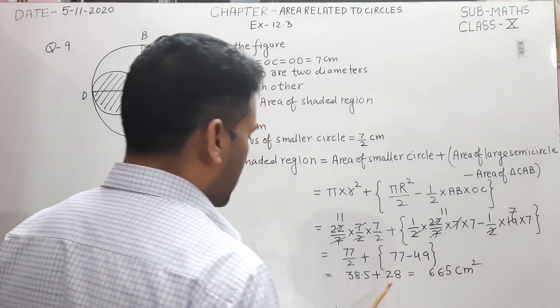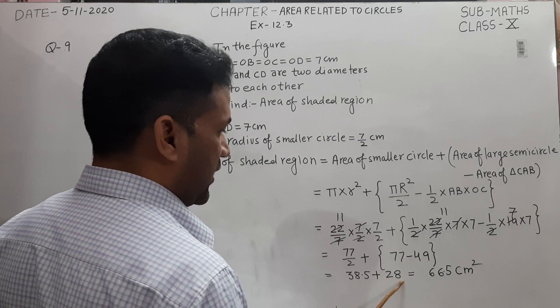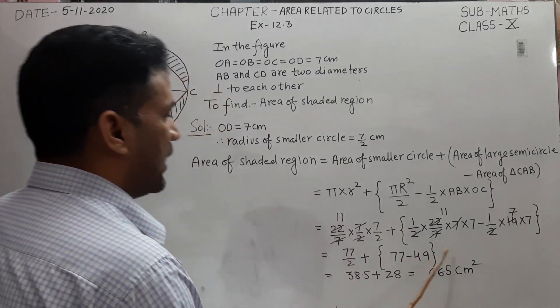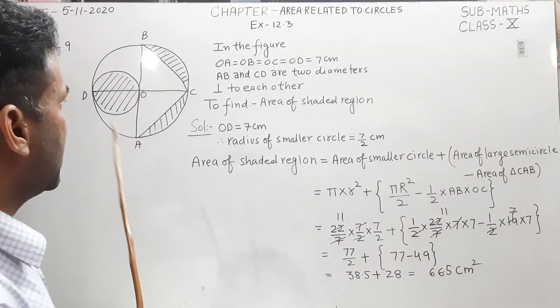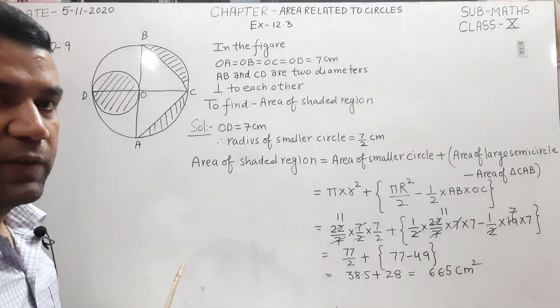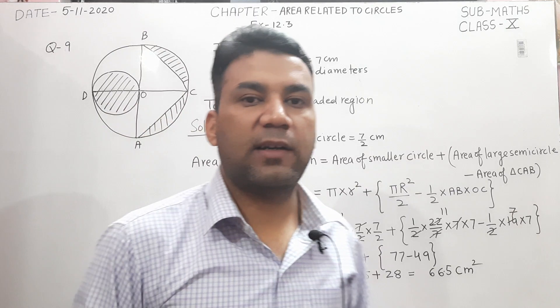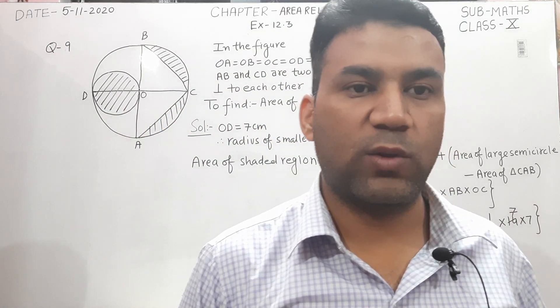By subtracting, we get 28, and the sum is 66.5 cm², which is the required area of the shaded region. I hope you understand the solution to this question. In the next video, we will discuss more questions. Thank you, students.